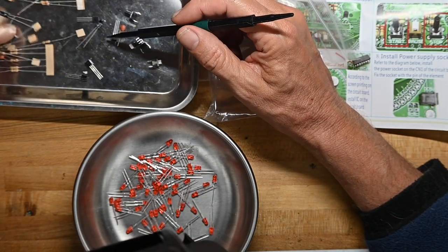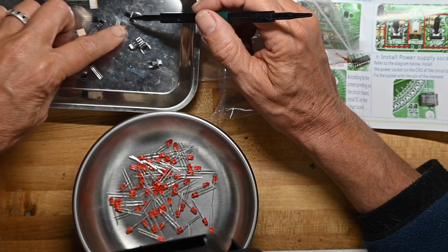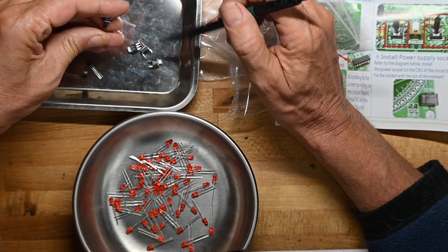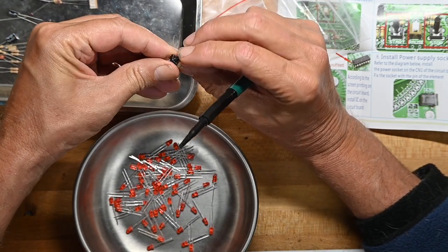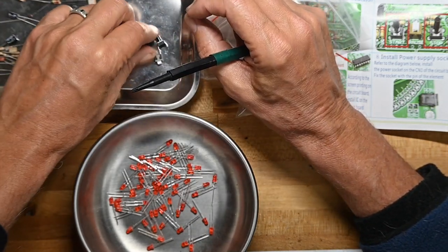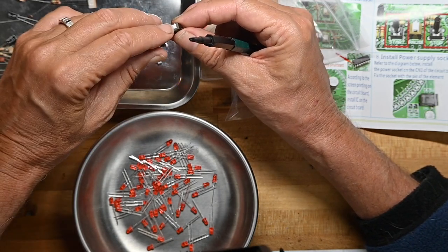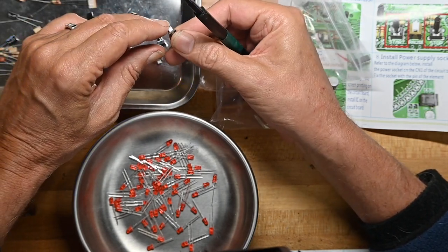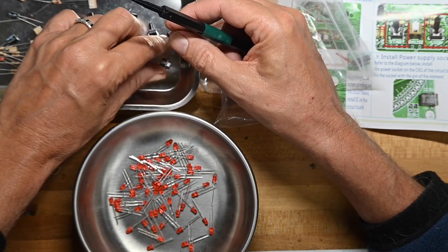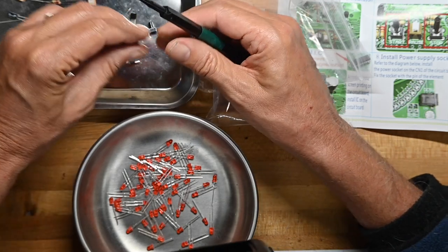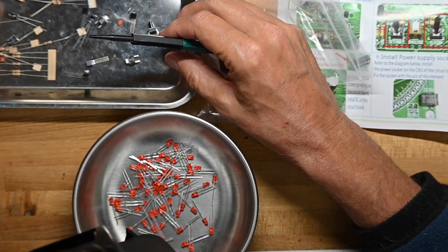LEDs sorted out. Let's see what else we have. One disc cap, two disc caps, a diode, some momentary press switches. Two of those, then a more permanent on-off type switch, and there are actually two of them. I don't know why there's two of them, but we'll find out along the way.